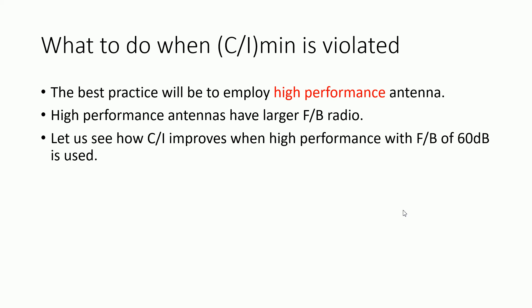A good question is: what do you do when the C/I minimum is violated? If the C/I ratio is lower than the C/I minimum, the best practice will be to use a high-performance antenna. A high-performance antenna is an antenna that has a larger front-to-back ratio. Let's take an example to see how the C/I ratio improves when the front-to-back ratio is increased from 50 dB to 60 dB.